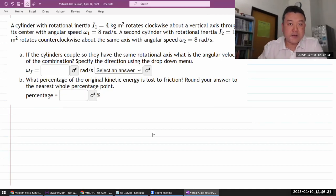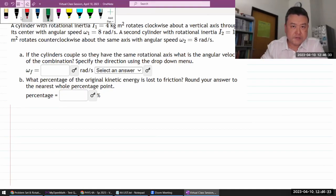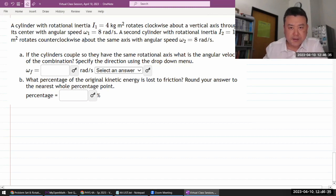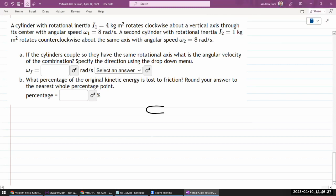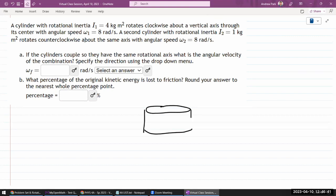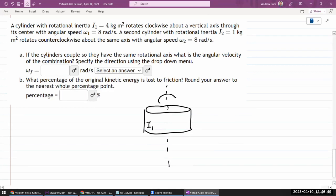Okay, so this question says a cylinder. Let me just start by drawing stuff so that I can understand things. Some cylinder with some rotation inertia that's being given to us rotates clockwise. Alright, clockwise, that's this way. About a vertical axis, yeah, that's what I do.